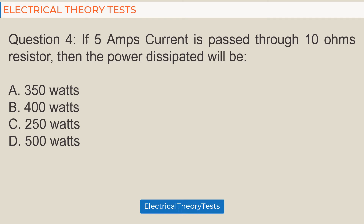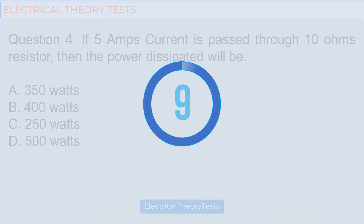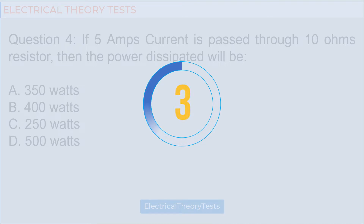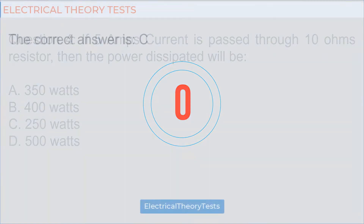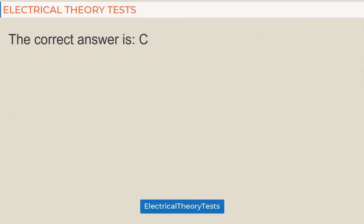Question 4: If 5 amps current is passed through a 10 ohms resistor, then the power dissipated will be — a) 350 watts, b) 400 watts, c) 250 watts, d) 500 watts. The correct answer is c) 250 watts.